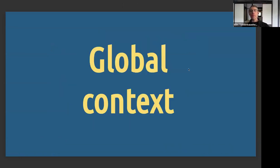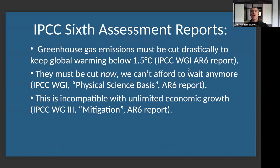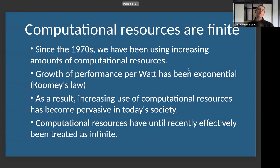Let's first give some global context. If we want to keep global warming below 1.5 degrees — or probably already 2 degrees — we must drastically cut our greenhouse gas emissions, and we must do that now. We can't really afford to wait. Unfortunately, this would require revisiting our economic model. All this is from the IPCC report, so it's not me saying that. And where I come in is on computing.